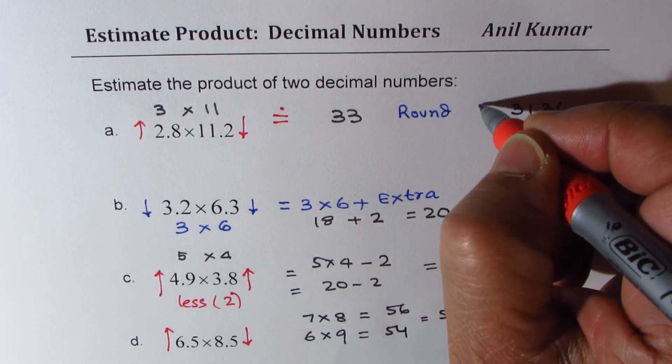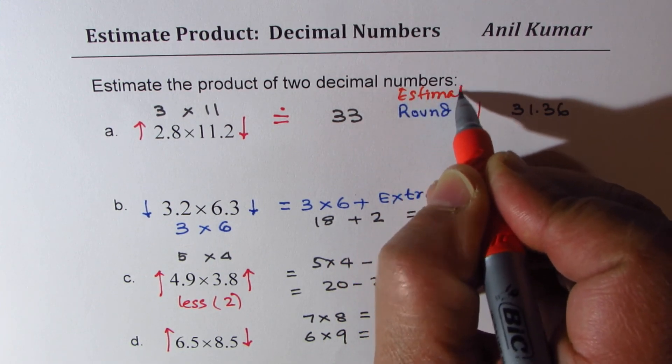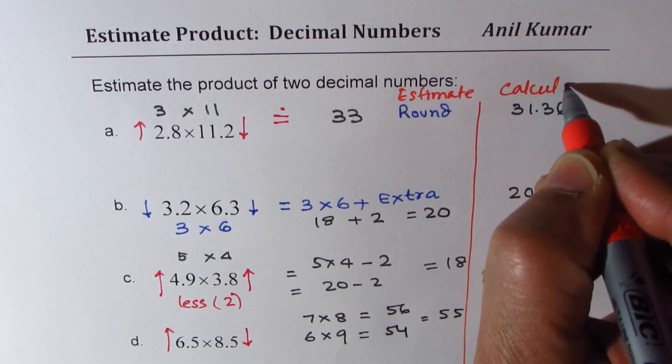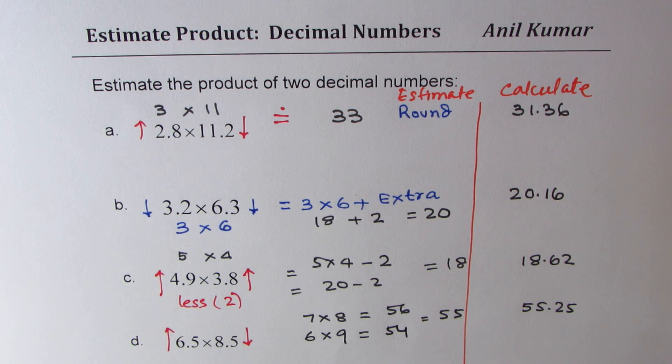Now if you check these two columns, one what we estimated and what we calculated, you'll find they are very close. So this technique of estimating product of decimal numbers really works. I'd like you to go through this video once again, try to understand the strategy we have applied, and then do some practice questions from your book. I hope that helps. Feel free to write your comments and share your views. And if you like and subscribe to my videos, that'd be great. Thanks for watching and all the best.